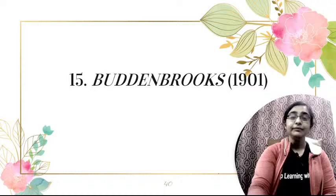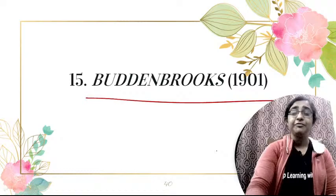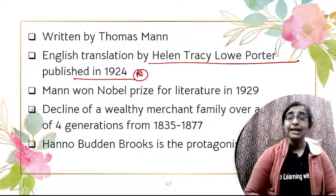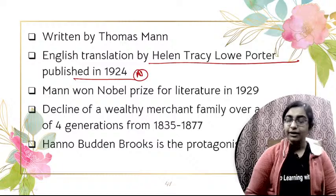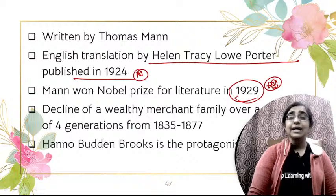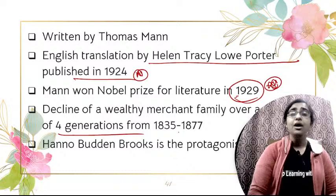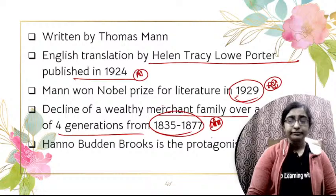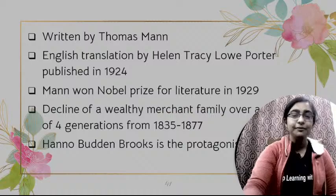Next is Buddenbrooks, published in 1901, the debut novel of Thomas Mann. The English translation was done by Helen Tracy Lowe-Porter in 1924. Thomas Mann received the Nobel Prize in 1929 for this novel and his overall contribution. It is a family saga dealing with four generations of a wealthy merchant family from 1835 to 1877, depicting a decline over that period. Hanno Buddenbrooks is the main protagonist.